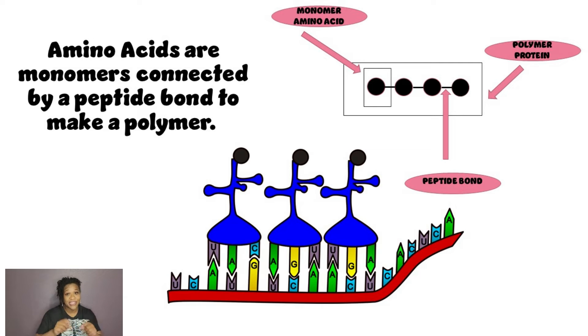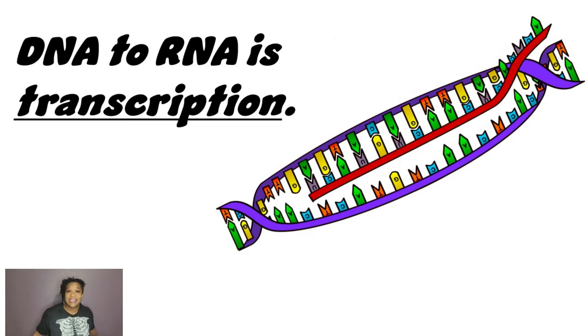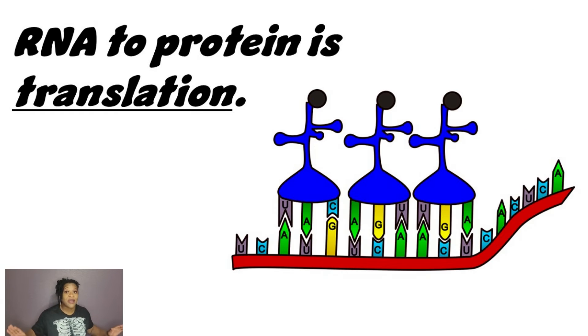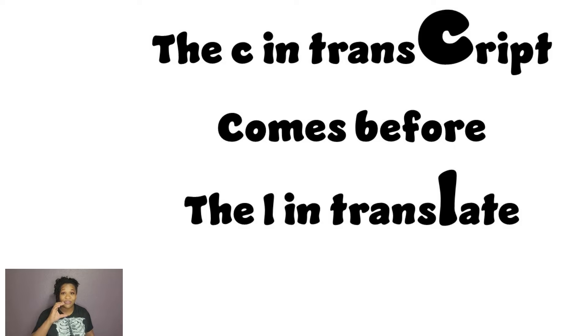Amino acids are monomers connected by a peptide bond to make a polymer.